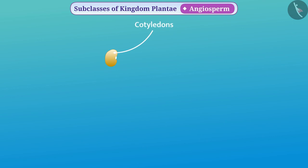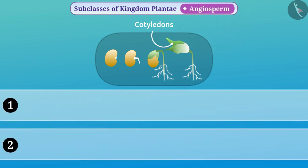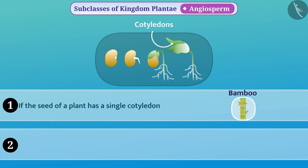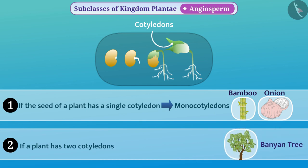The seeds have cotyledons which turn green after germination. Depending on the number of cotyledons, angiosperms can be classified into two parts. If the seed of a plant has a single cotyledon — such as bamboo and onion — then such plants are called monocotyledons. If a plant has two cotyledons — such as a banyan tree — then such plants are called dicotyledons.